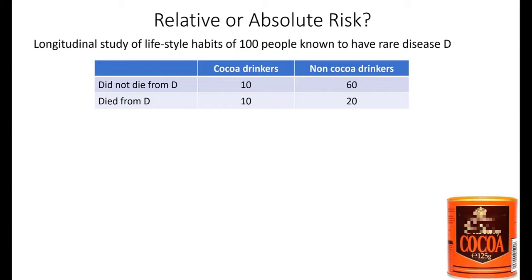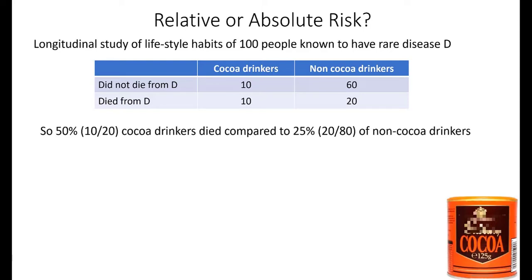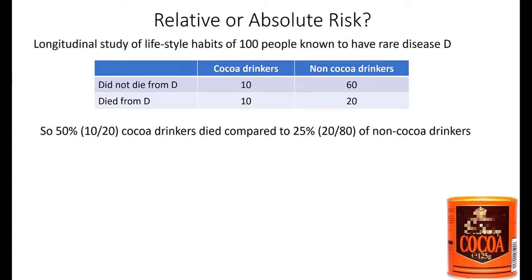We found that 20% of the people drank cocoa, roughly the same as the population generally — there's nothing about disease D which makes people more likely to be cocoa drinkers. But of those who drank cocoa, 10 out of the 20 died, compared to the non-cocoa drinkers, of whom there were 80, and only 20 of those died. So 50% of the cocoa drinkers died compared to only 25% of the non-cocoa drinkers. As 50 is twice 25, we can say the risk of dying is 100% greater for cocoa drinkers than for non-cocoa drinkers. That's what we call the relative risk.